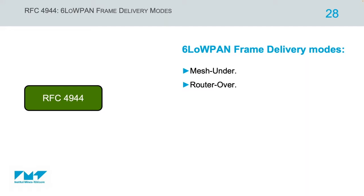Both approaches — mesh under and route over — are widely employed in smart grid and metering networks around the world. It doesn't mean that one is better than the other; they are just two different approaches, and both are already deployed and operating by industrials and operators in their smart grid and metering networks.